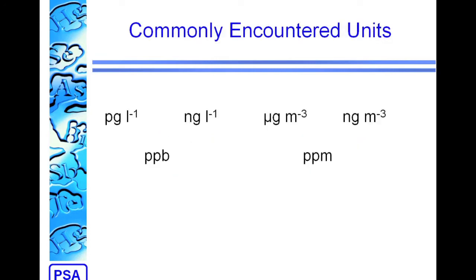When we're looking at mercury gas phase concentrations, a wide range of different units are commonly encountered, from picograms per liter, nanograms per liter, micrograms per cubic meter, nanograms per cubic meter, PPB and PPM.